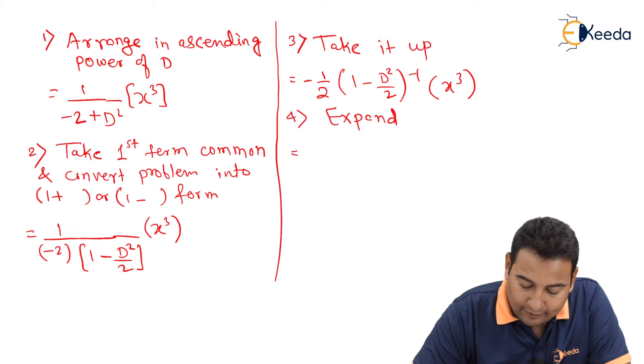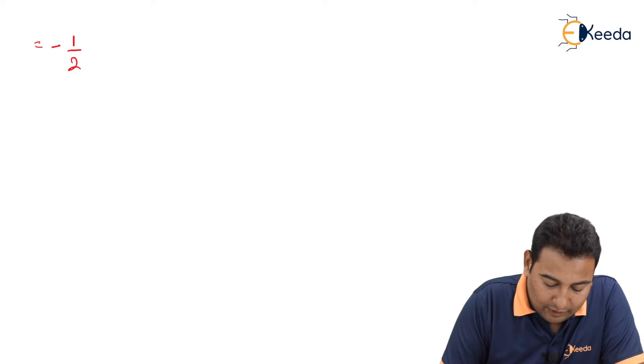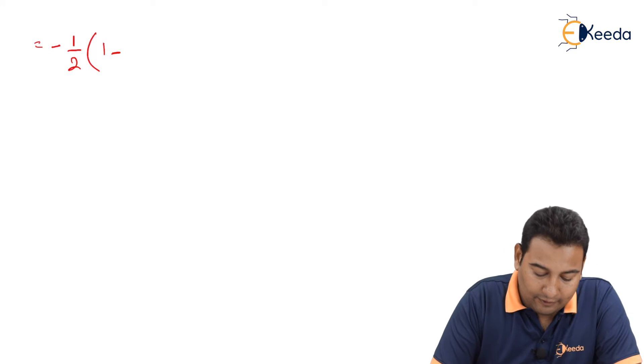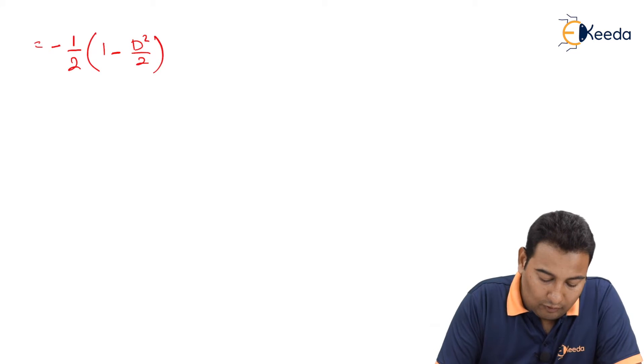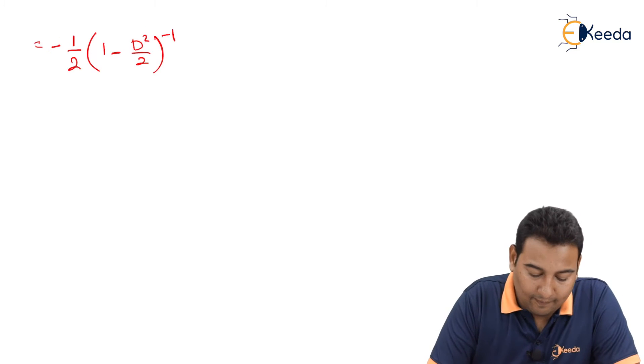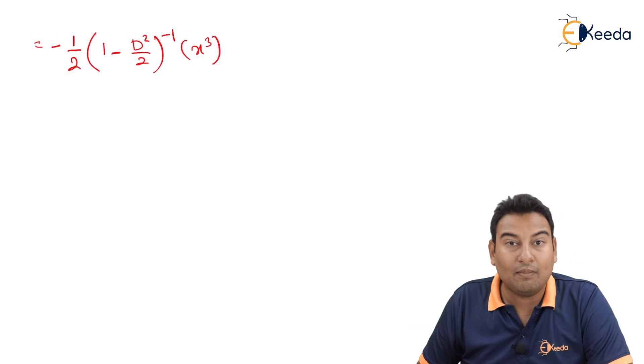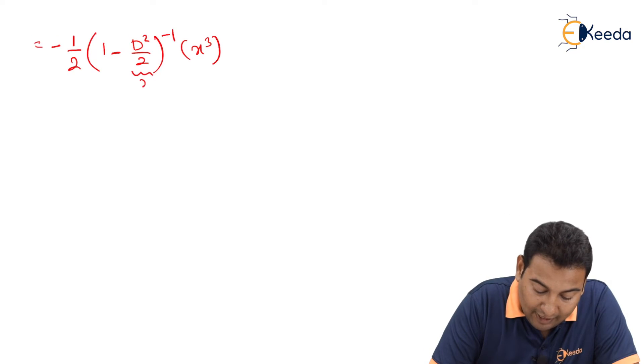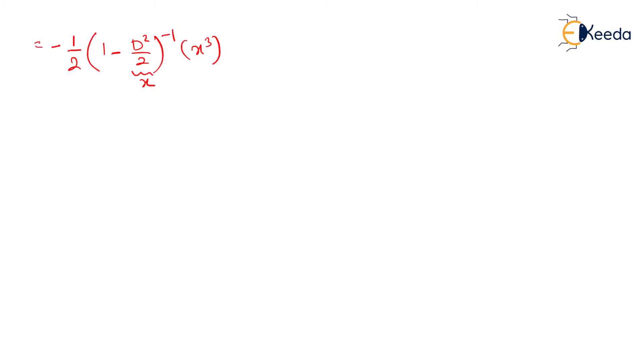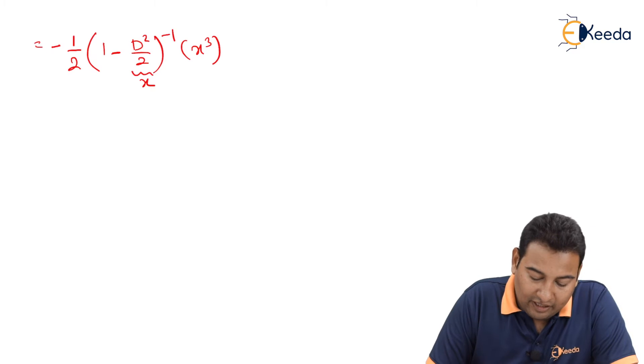In this case, this minus 1 upon 2 will remain as it is. Here it is minus and here also it is minus. Therefore both are minus, everything will be plus. This is my x. Let me expand it.